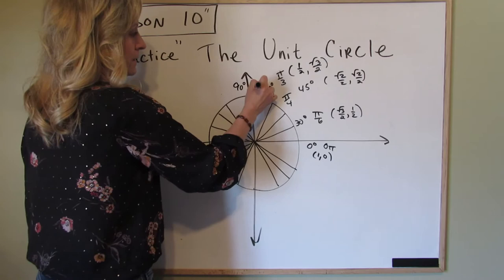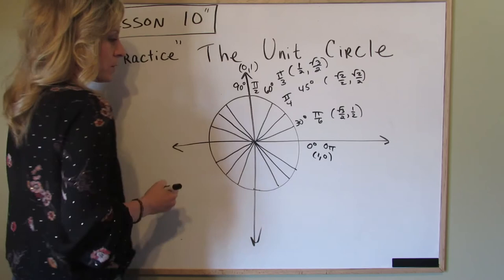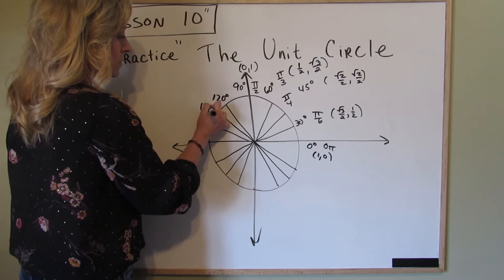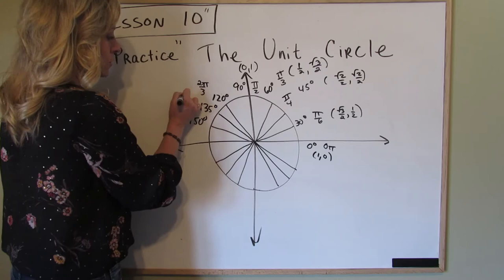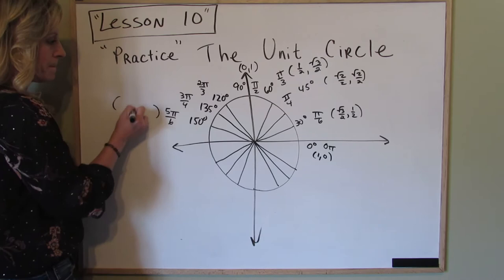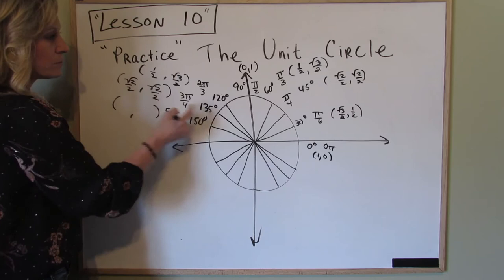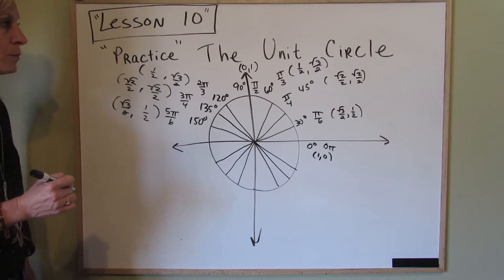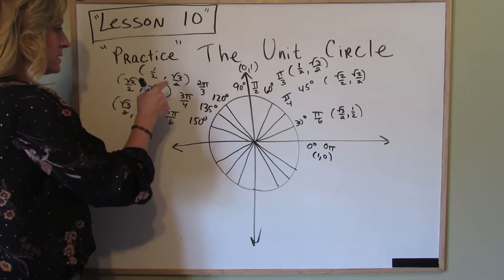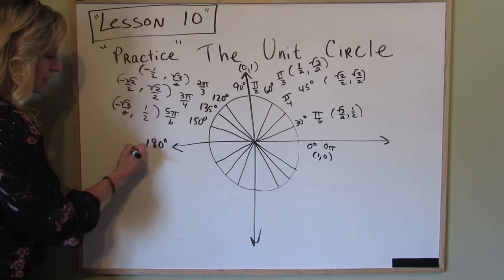We're coming around, we're at 120, we have 135, and we have 150. 120 is 2 pi over 3, 135 is 3 pi over 4, 150 is 5 pi over 6. Make them match up: 1 half, square root of 3 over 2, square root of 2 over 2, square root of 2 over 2, square root of 3 over 2, 1 half. Decide what's positive in quadrant 2. The sine is positive, so the cosine gets a negative sign. We're here at 180. 180 is pi. Cosine is negative 1, sine is 0.